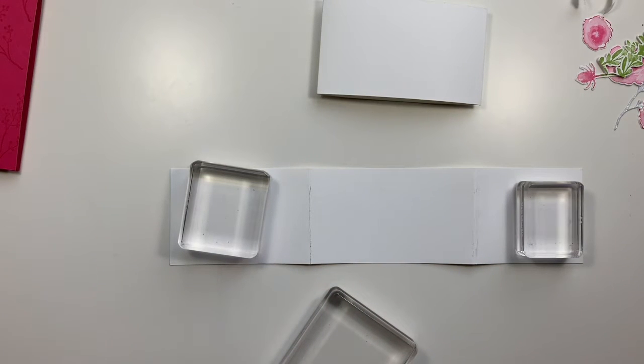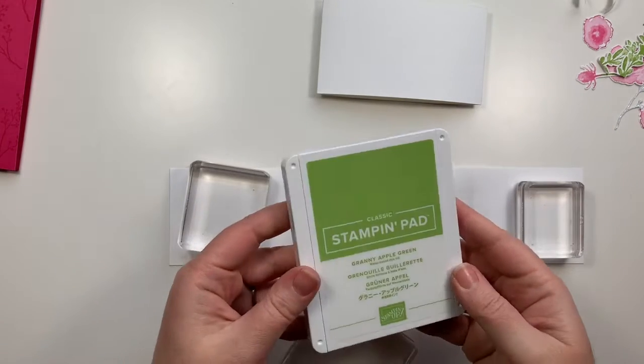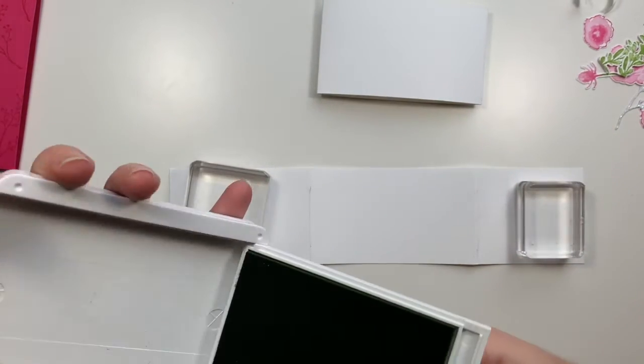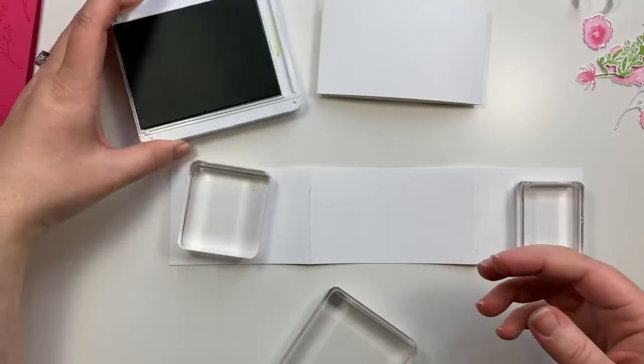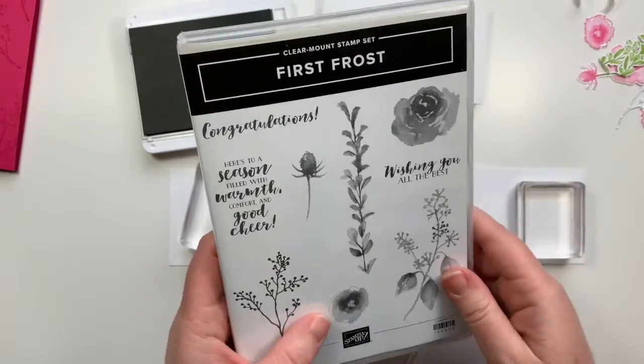And you do want to stamp your images first, probably. You'll see the difference between me stamping this flat versus me stamping the other belly band that I already assembled. I did have a little bit of trouble on the belly band that I already assembled. But I would recommend stamping before you assemble the belly band.